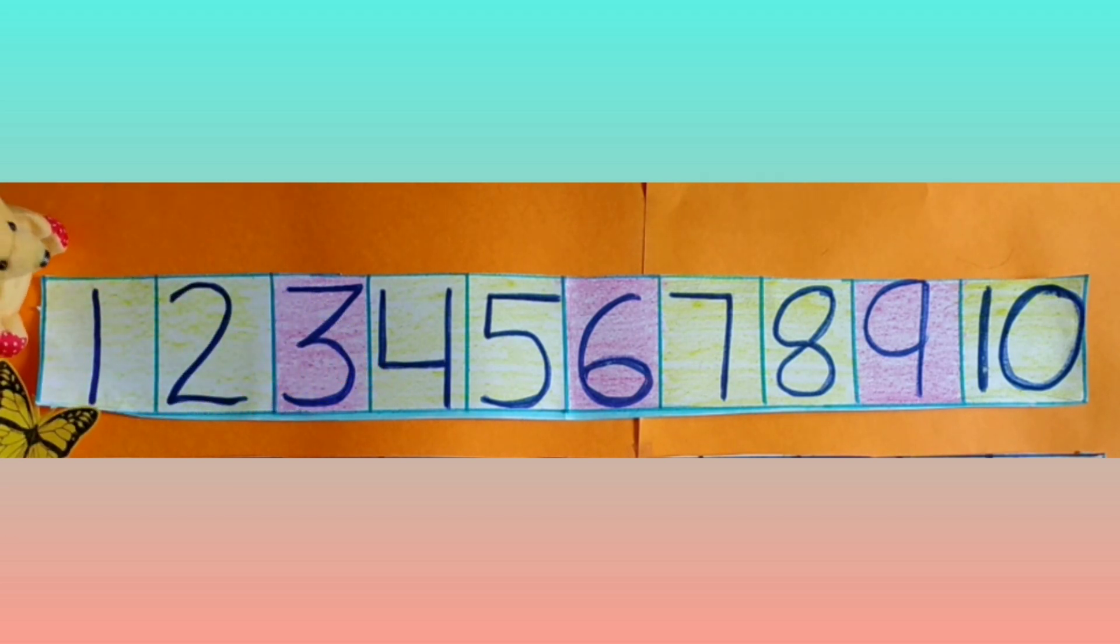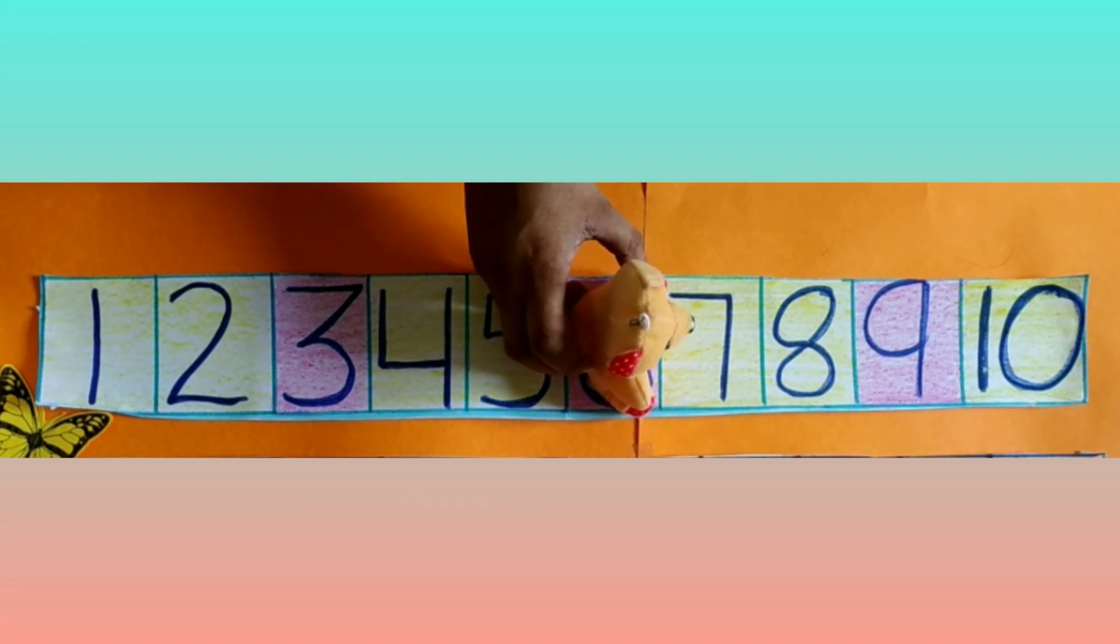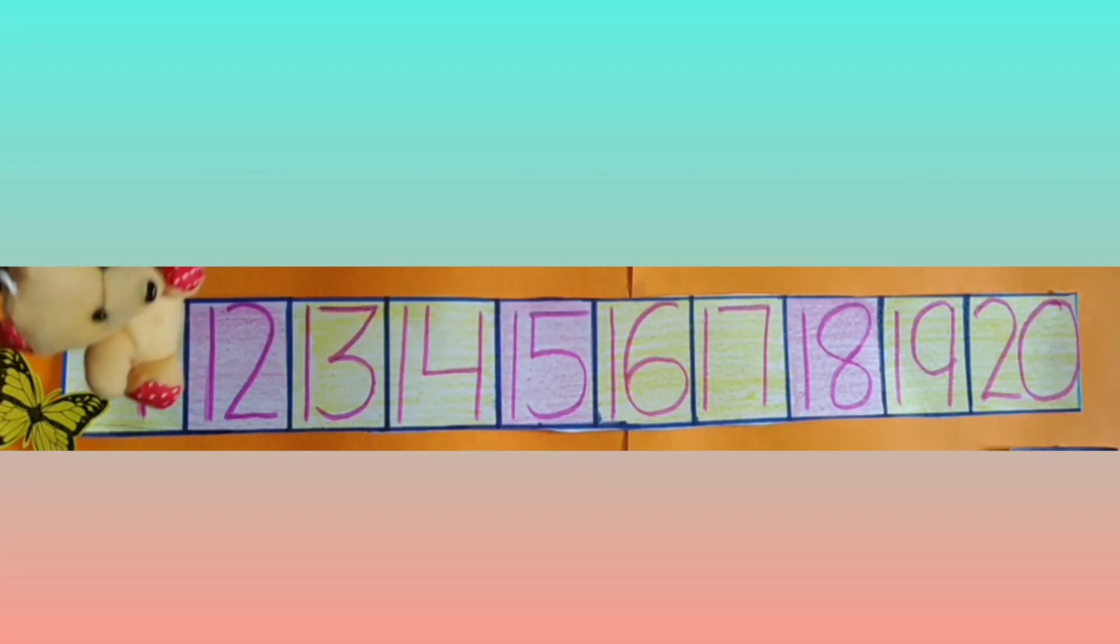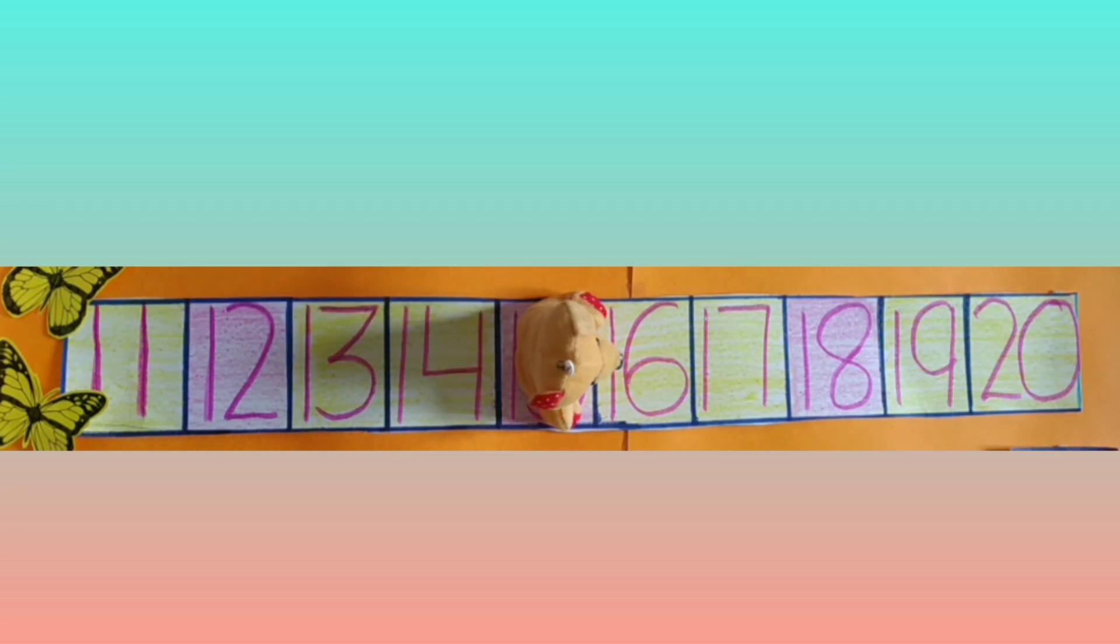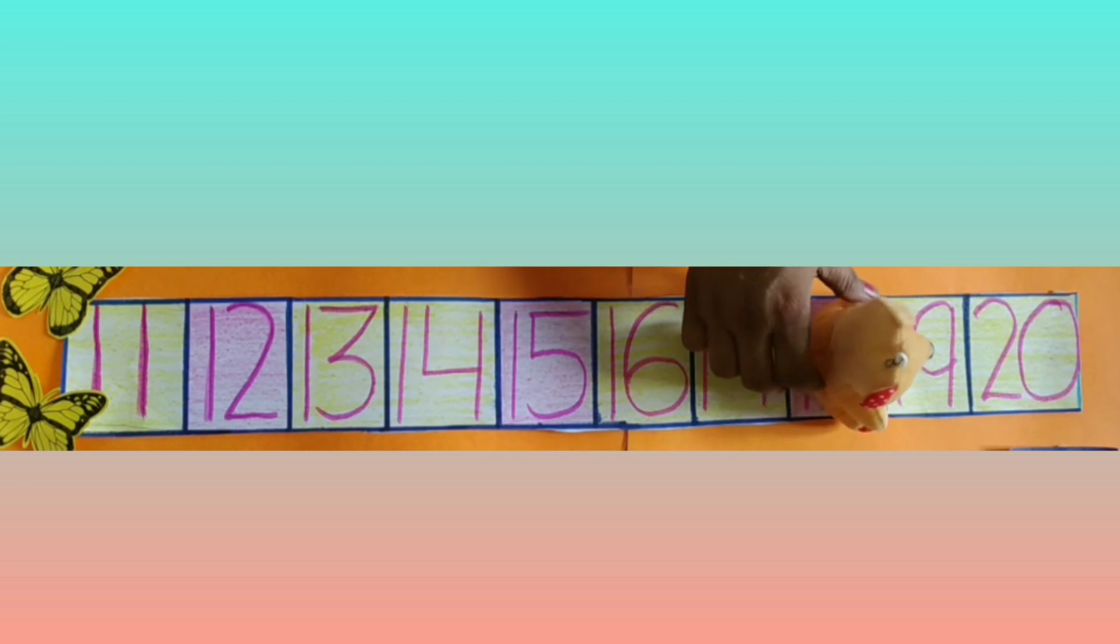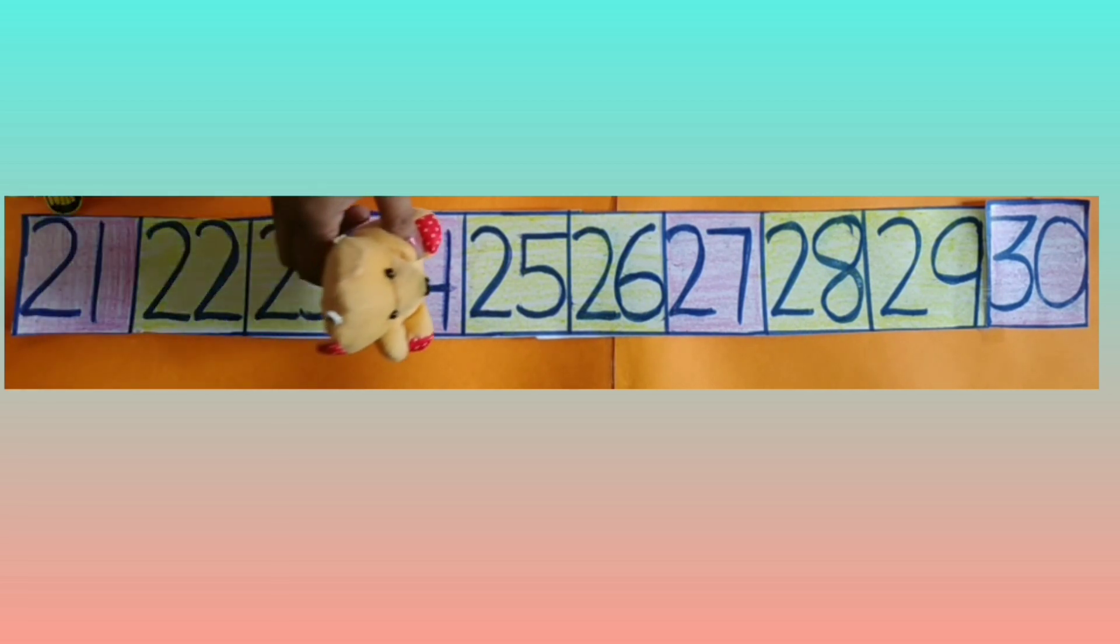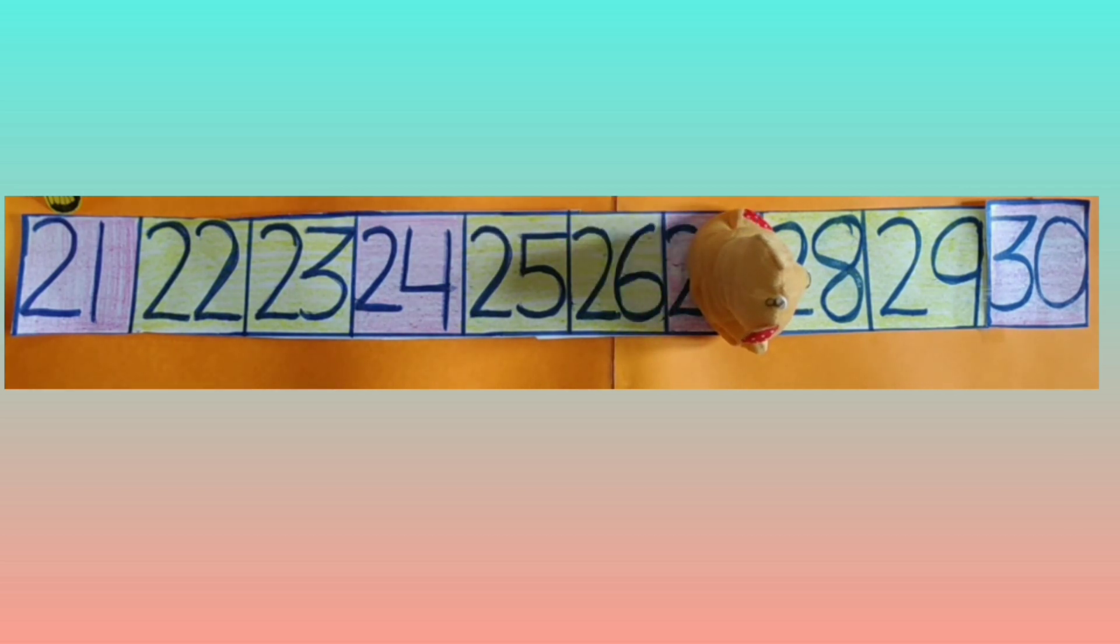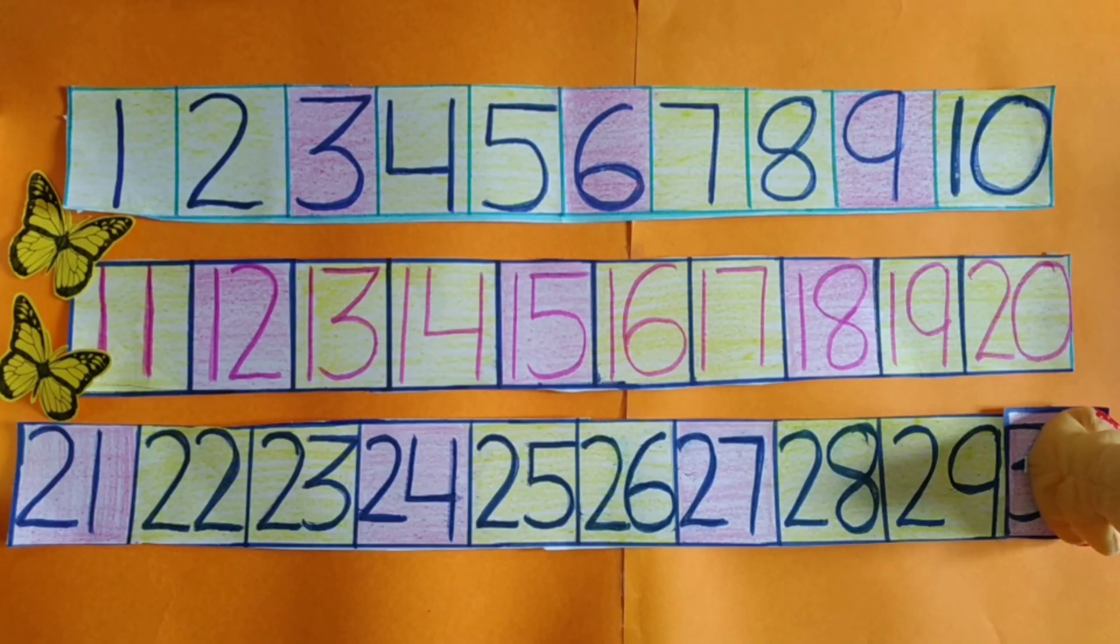Let's start. Teddy lands on 3, 6, now on 9, on 12, 15, on 18, on 21, 24, 27, and 30. It reaches 30 by jumping continuously.